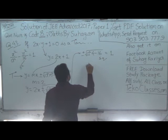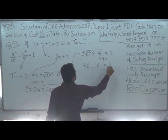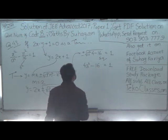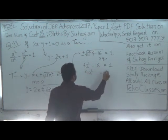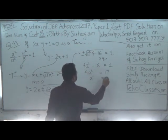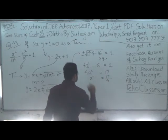So, a²·4 − 16 = 1, which gives 4a² = 17, therefore a² = 17/4.